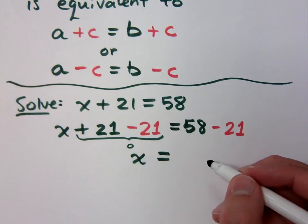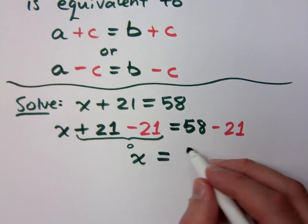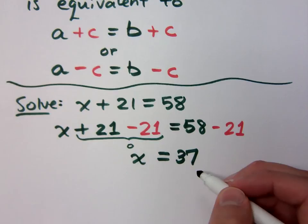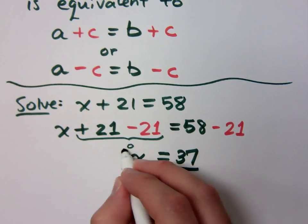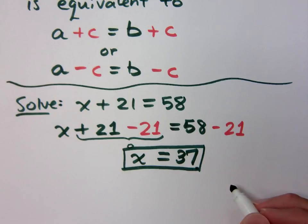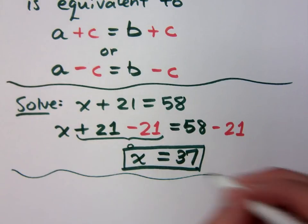So, x equals what? x equals 37. Do you all agree? Now, I know you guys don't write everything that I write. Did you actually work it this way in your notes? No, I know what you guys do. You don't have to lie to me. It doesn't need to be a secret.